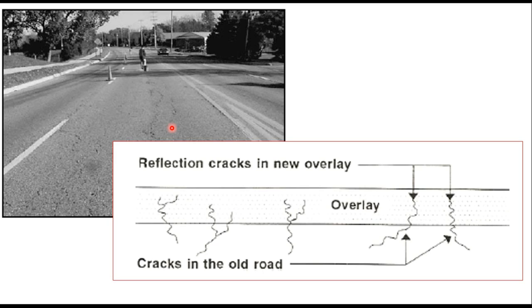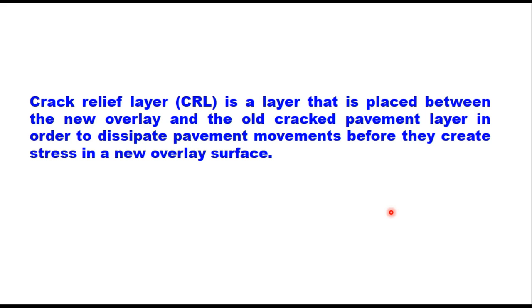A cracked surface provided with an overlay without any treatment to the cracks will, after some time, show cracks appearing on the surface of the overlay — that is called reflection cracks. If sealing of cracks is not an economic solution, a crack relief layer is provided between the new overlay and the old cracked pavement layer in order to dissipate pavement movements before they create stress in the new overlay surface.